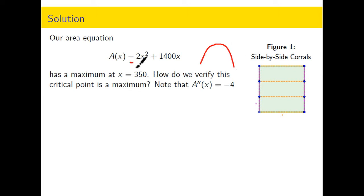We know that this area formula is a downward facing parabola because of its structure, but knowing that it's downward facing at x equals 350 guarantees us that the critical point is a maximum.